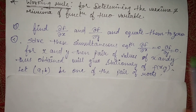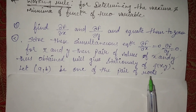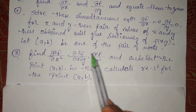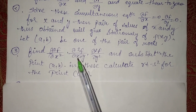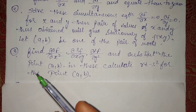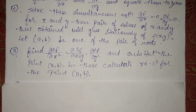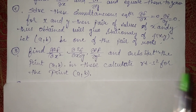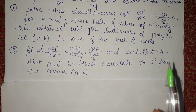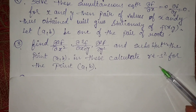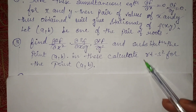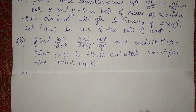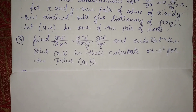In the second rule, we equate all these equations to zero and find the roots. Then in the third step, find del² f / del x², del² f / del y², and del² f / del x del y. We differentiate with respect to x, y, and xy, and calculate rt minus s². This value will tell you whether there is maxima or minima.